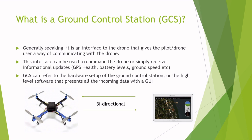Commands could be things like move to this waypoint, or return to launch, or things like that. And monitoring information could be things like seeing what the current status of the GPS health is, seeing what the battery levels are like, seeing how fast the drone is moving, things like that. And typically when people refer to the ground control station they're referring to some sort of GUI, but that doesn't necessarily have to be the case because MAVProxy is not a GUI per se.